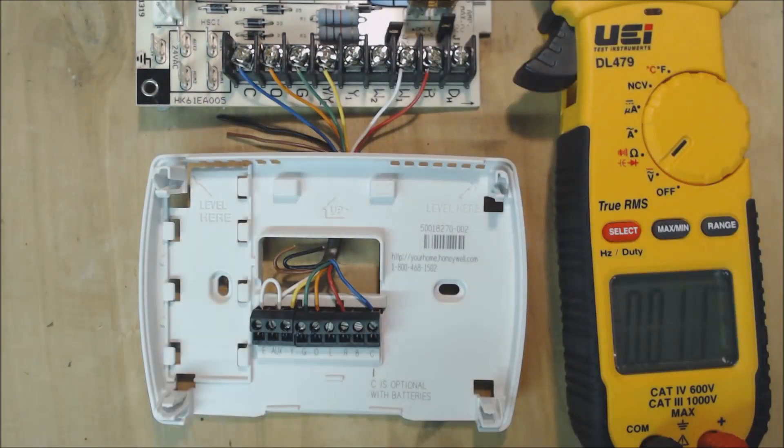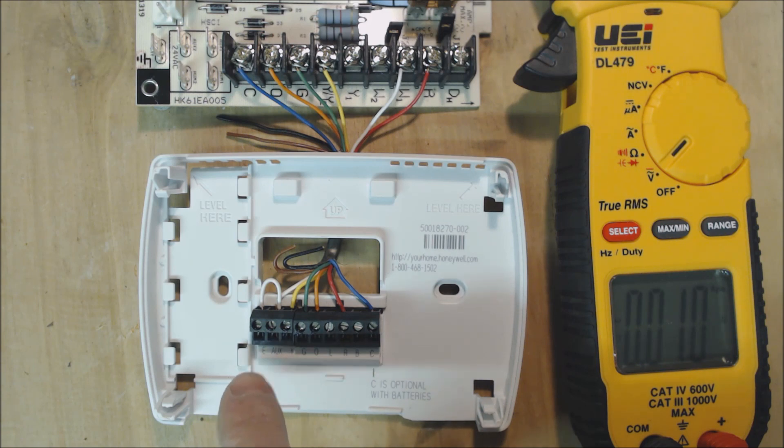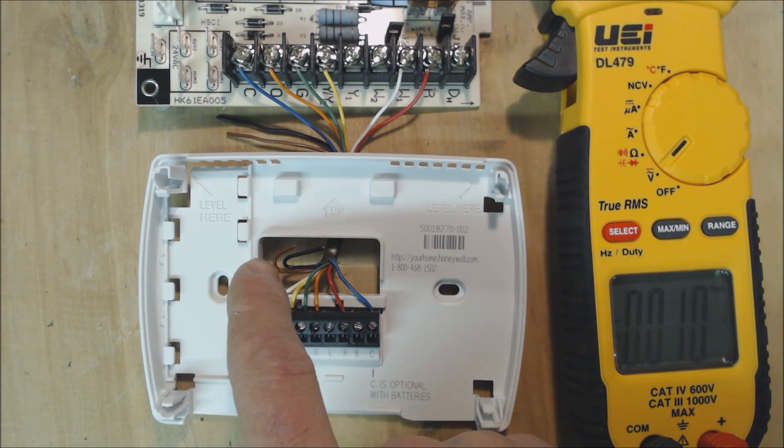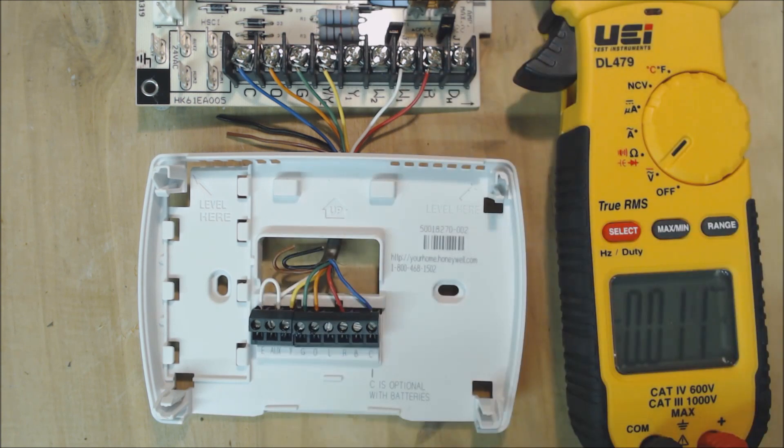Now if we open this thermostat up, you're going to see that we have a jumper between aux and E. If you had three types of heat—say your heat pump for refrigerant heating the house, then auxiliary heat like a hot water coil, and then E meaning electric resistance heat—you could have three types of heat if you pulled that jumper out. But a lot of times this jumper is left in place so that electric resistance turns on anytime aux is called or E is called.